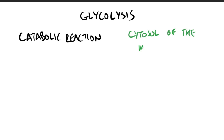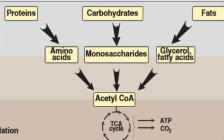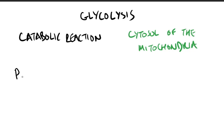Glycolysis takes place in the cytosol. These complex macromolecules are broken down — proteins to amino acids, carbohydrates to monosaccharides, fats to glycerol and fatty acids — in order to yield acetyl coenzyme A. This is important because acetyl CoA leads to the citric acid cycle, also known as the Krebs cycle, which is the main cycle needed for gaining ATP, yielding carbon dioxide and water.